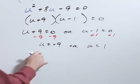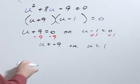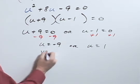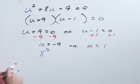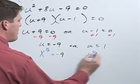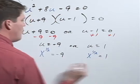Now recall that u was really x to the 1 half power. So this would be x to the 1 half power equals negative 9 or x to the 1 half power equals 1.